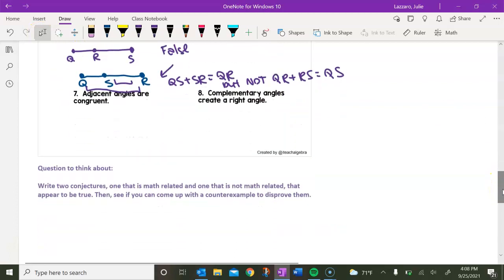Okie doke. So some questions to think about before you come into class. Think about writing two conjectures of your own, one that is related to math and one that is not related to math that appear to be true. Let's see if you can come up with a counter example to disprove that. So we have some examples of some math related conjectures up above.